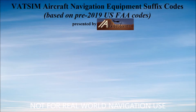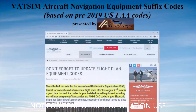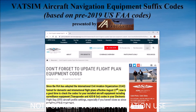Note: why do I say in the graphic that they're based on pre-2019 FAA codes? Well, because as of the end of 2019, even the FAA isn't using them anymore. They've now adopted the more descriptive, but more complicated ICAO format for describing what navigation capabilities your aircraft does or does not have. On VATSIM, we're still using the older FAA codes for now.